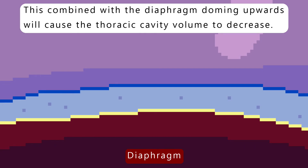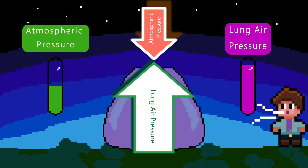This combined with the diaphragm doming upwards will cause the thoracic cavity volume to decrease. This forces air out of the lungs and into the atmosphere because the pressure is higher in the lungs compared to the atmosphere.